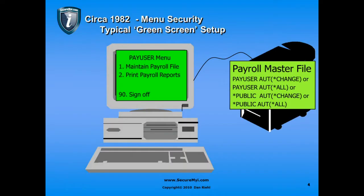In this way, data was protected because the only way to get to the data was through these menu options and through the RPG or COBOL business programs written to protect the data and ensure integrity. At the back end, the payroll master file had basically no authority on it at all — essentially public-all authority or pay-user-all authority. It really didn't matter what the authority on those files was, because the only way to reach the data was through the green screen menu.